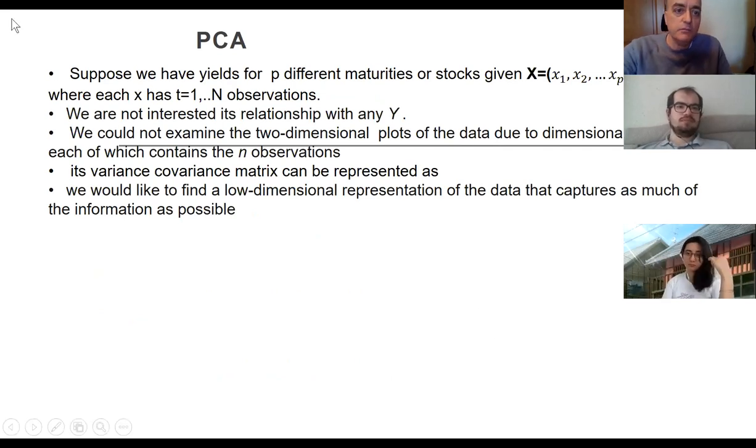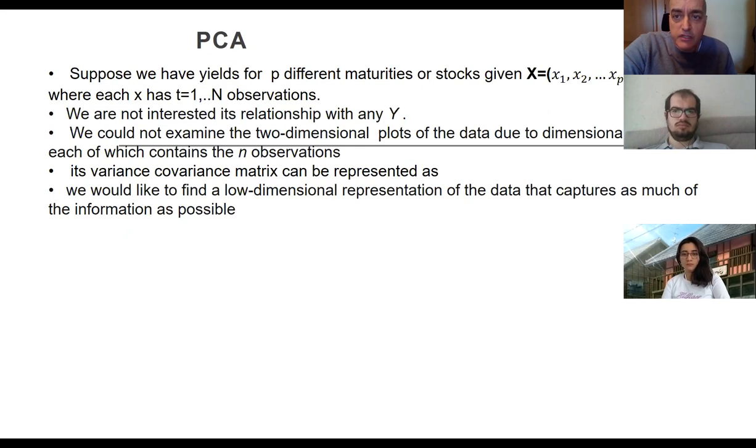What we would like to see in PCA - you have a P dimensional X. P is the number of variables, the dimension of these variables. If you have 100 stocks then P is 100, if you have 10 different interest rates with different maturities then P is 10. However, we might also be observing these X1 to XP either cross section or time series where you might have N different observations. So you have N times P vector of X's.